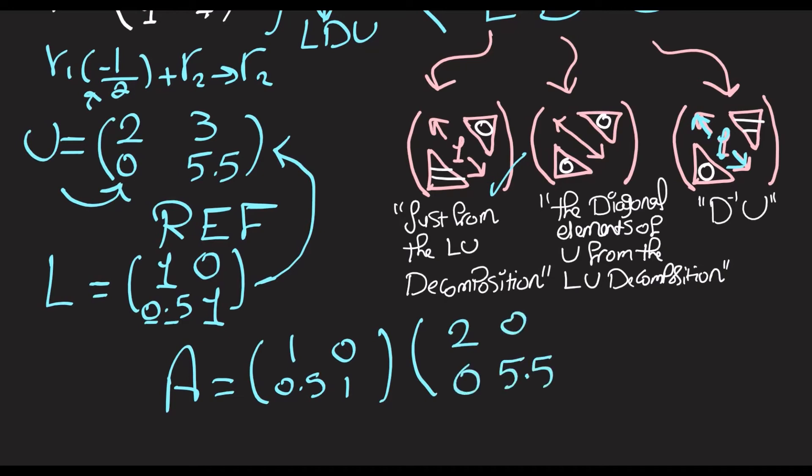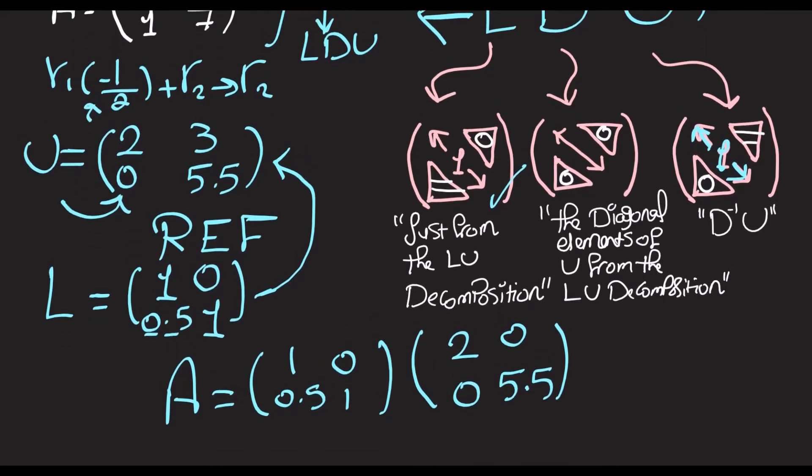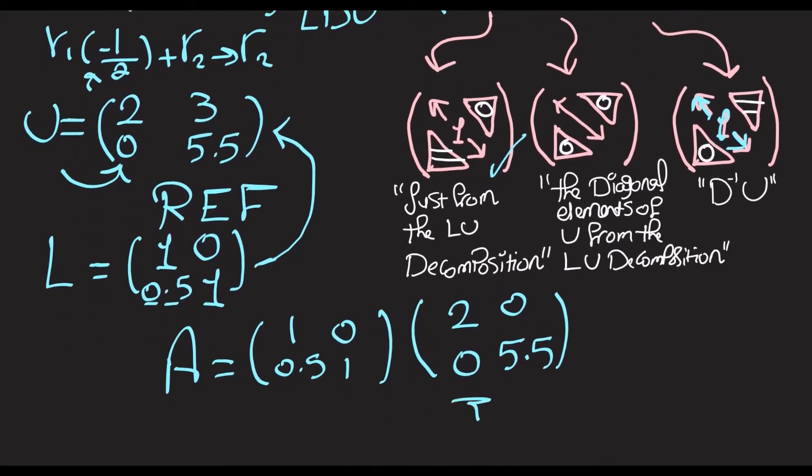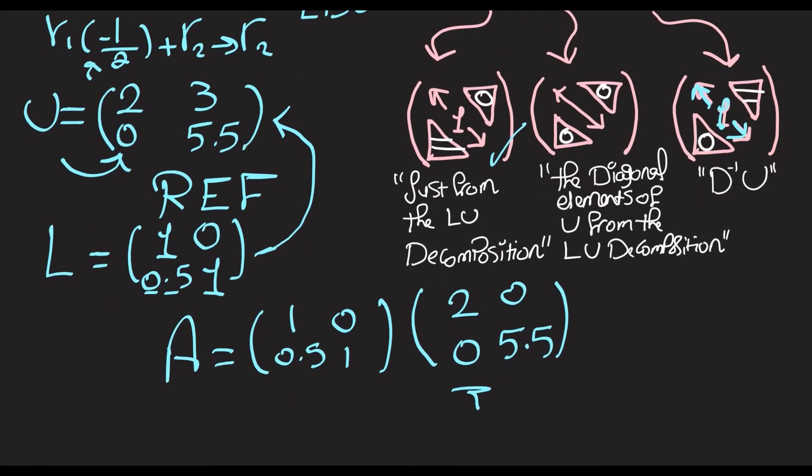And then U becomes the old U but multiplied by D inverse. Because here we're trying to decompose U - this U we're trying to decompose it into DU. So we said that D is going to have the diagonal elements of U.